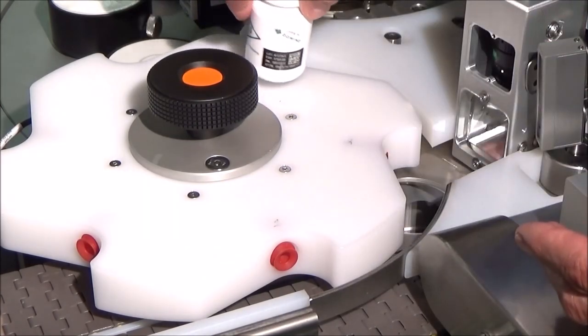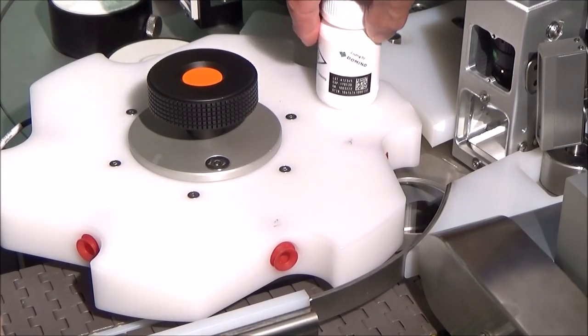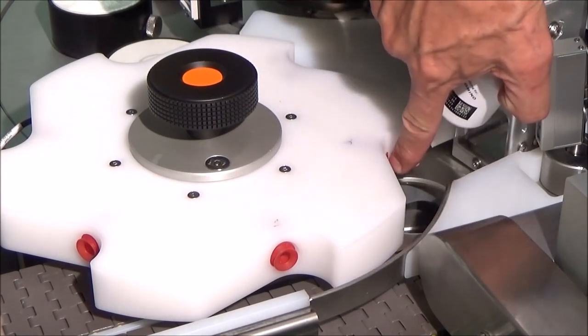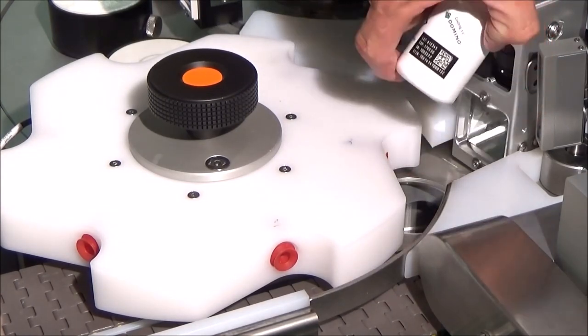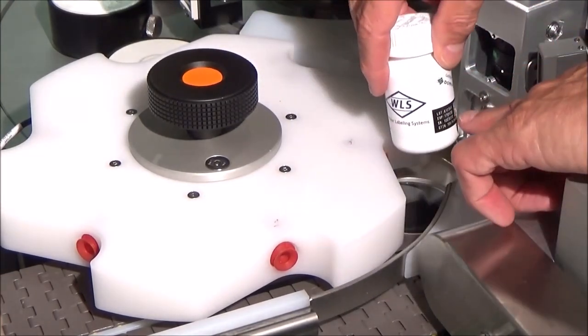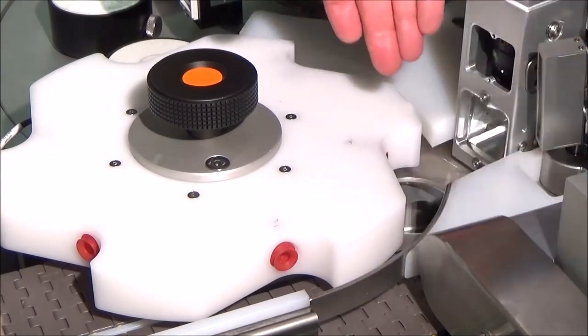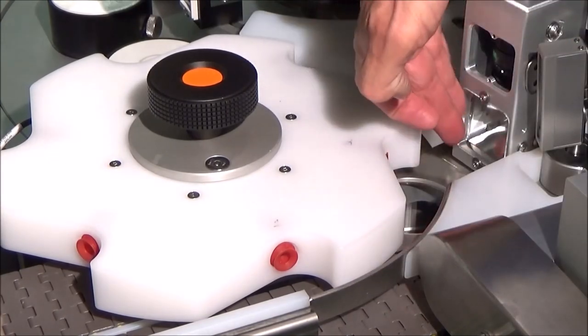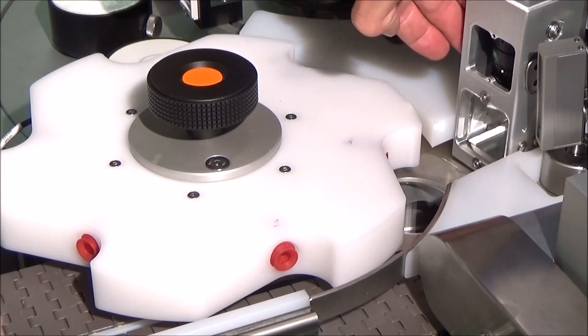As the labeled bottle reaches the exit star wheel of the labeler, the bottle is held in position by vacuum cups shown here. This ensures that the bottle is stable while we acquire the 2D code on the label with an Optel camera which, in conjunction with the mirror system, is positioned in such a way as to have a clear view of the code on the label.